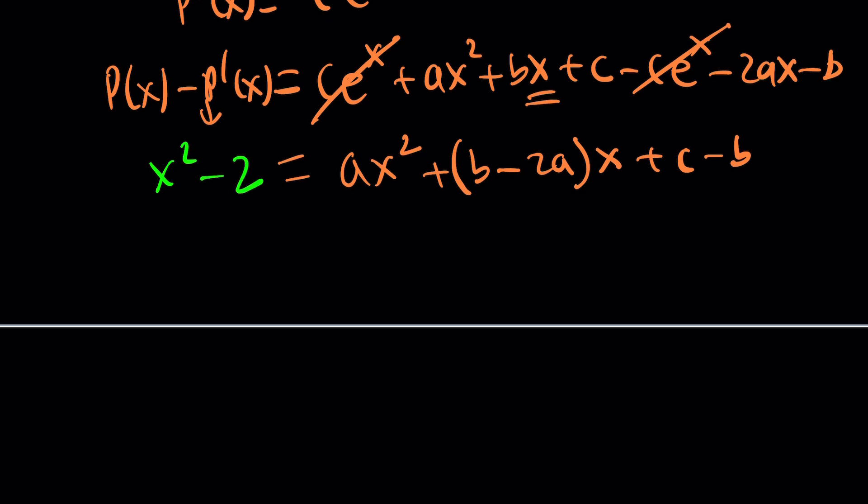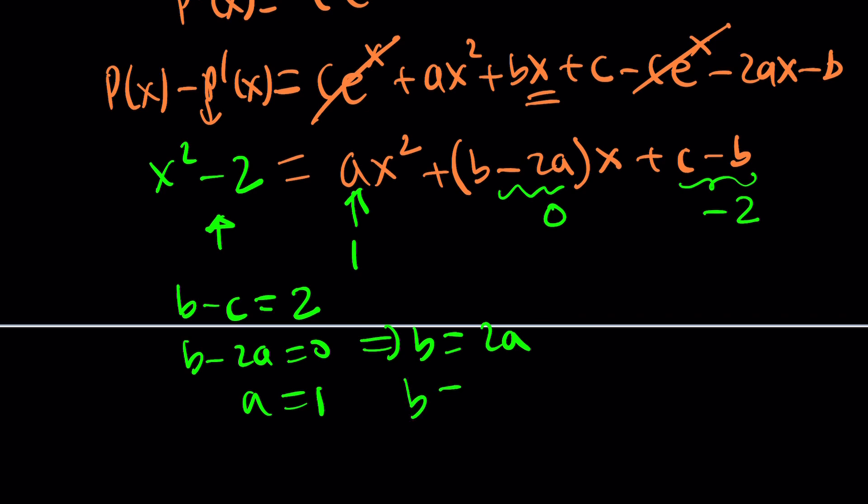And we know that this difference is equal to x squared minus 2. What does that mean? That means this needs to be 1, and this needs to be 0 because there's no x here. These are two polynomials that are equivalent, true for all values of x over the set of real numbers. And c minus b needs to be negative 2, which also means b minus c equals 2. So b minus c is 2, b minus 2a is 0, and a is 1. Can you solve this system? Of course. Easy. Look, b equals 2a, but a is 1, so b is 2. If b is 2, c is 0. Great.